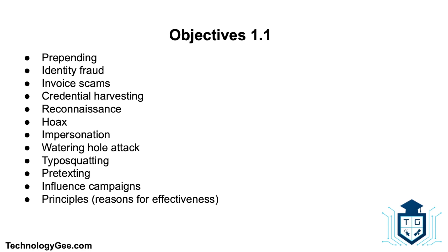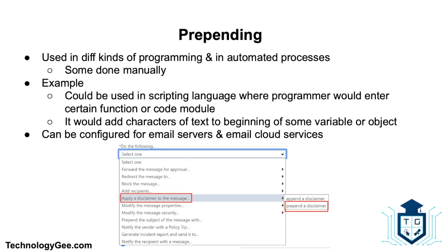Let's talk about pre-pending. Pre-pending is a word that means to attach content as a prefix. It is often used in different kinds of programming and in automated processes. Some pre-pending is done manually — for example, a pre-pend command could be used in a scripting language that a programmer enters into a function or code module to add certain characters of text to the beginning of a variable or object. Other kinds of pre-pending are automated; you can configure email servers or cloud email services to pre-pend a message in the email subject line to identify emails coming from outside the organization.